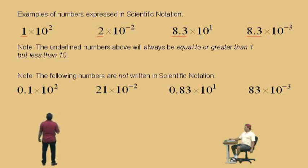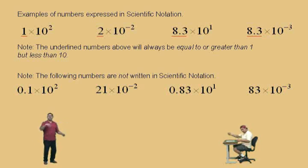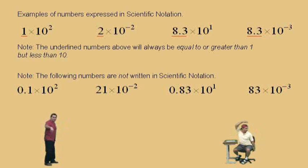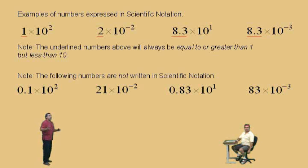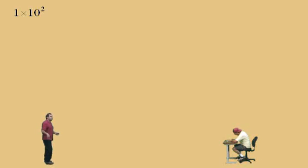Let's talk about what scientific notation actually represents. Some of you say you just move the decimal to the left and the right, and that's all — like that song, to the left, to the right. We'll talk about that later. For now, let's try to understand why moving the decimal works with one times ten squared.